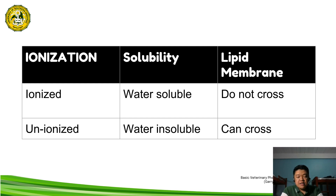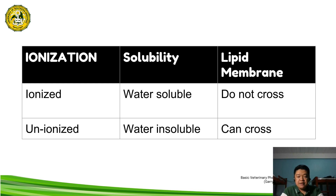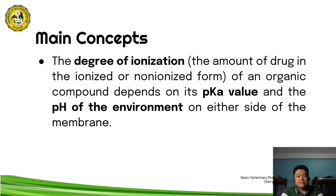Regarding the degree of ionization and its influence on solubility: the ionized form is water-soluble, while the non-ionized form is water-insoluble. For lipid membrane solubility, the ionized form is less lipid-soluble and will not readily cross the cell membrane, whereas the non-ionized form is lipid-soluble and can readily cross the cell membrane. The degree of ionization of an organic compound depends on its pKa value and the pH of the environment on either side of the membrane.